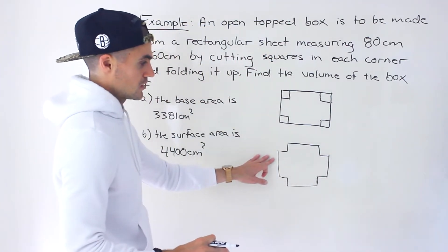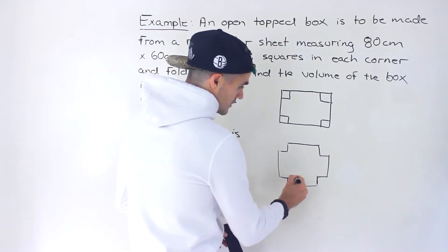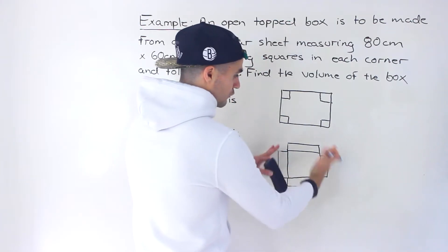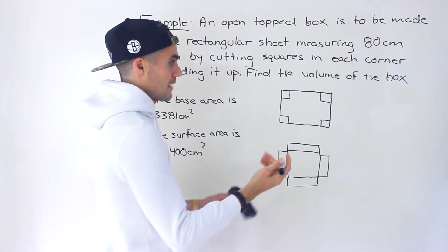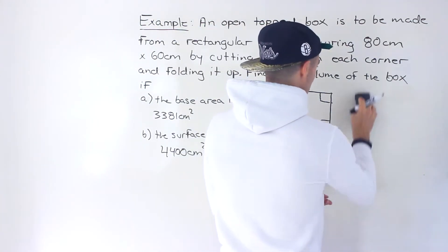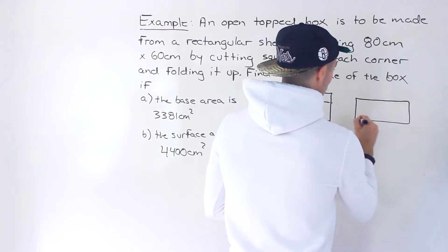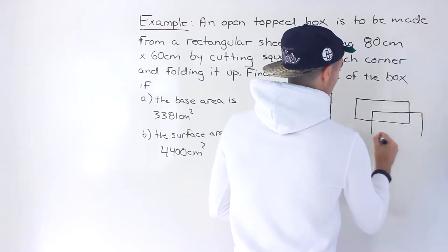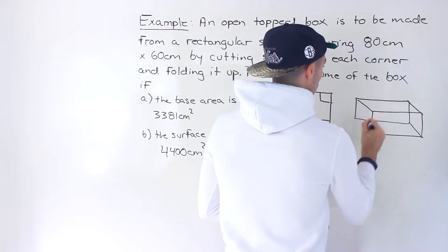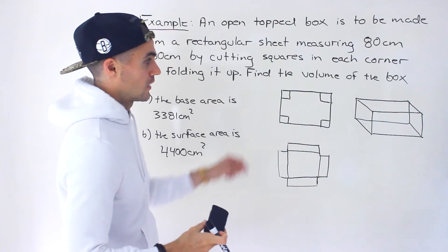After we cut the squares, we end up with something like this. Then what we're going to do is take each of these parts — the flaps — and fold those up in order to get the box. So what ends up happening is we end up with a 3D box like this after we fold these parts up, right after cutting out the squares. This is what we're going to end up with.